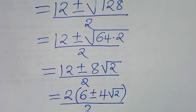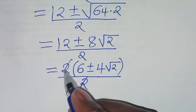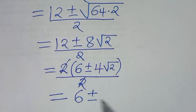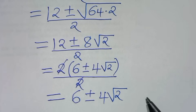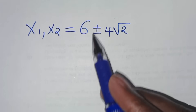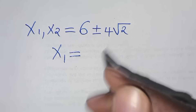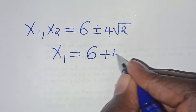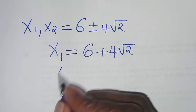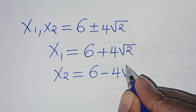So this implies that x1 equals 6 plus 4 square root of 2, which is the first solution. And x2 equals 6 minus 4 square root of 2.